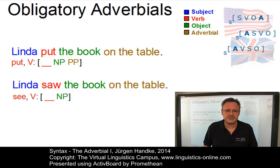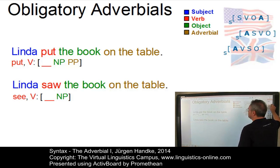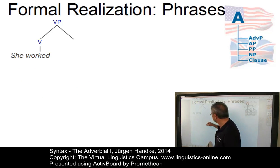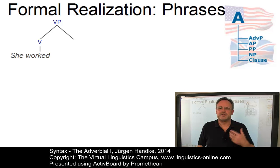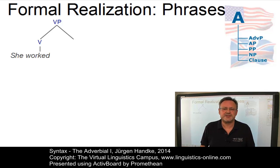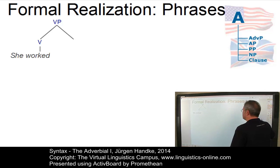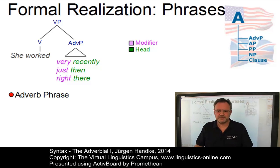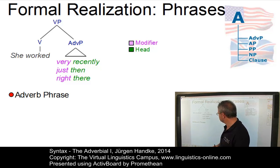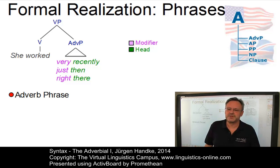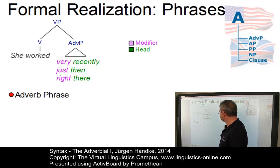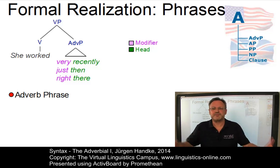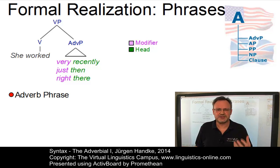Let's now look at the syntactic realization of the syntactic function 'adverbial'. The first group of elements I would like to look at are phrasal categories. Here is a sentence fragment: 'she worked.' Let's insert phrasal categories into the empty slot. Phrasal categories consist of an obligatory head and an optional modifier. For example, adverb phrases consist of an adverb — 'recently', 'then', and 'there'. By the way, 'recently' is an open class adverb, whereas 'there' and 'then' are closed class adverbs. Adverb phrases can be inserted here; they have optional modifiers such as the intensifiers 'very', 'just', or 'right'. So adverb phrases can realize the syntactic function adverbial.